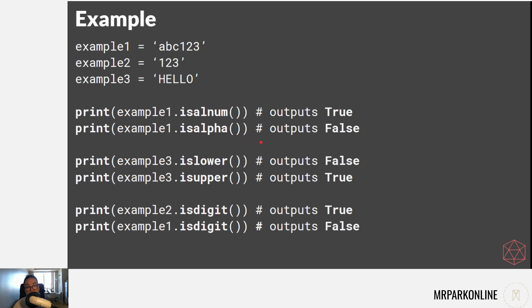Example one is 'abc123', example two is '123', example three is 'HELLO'. Example one isalnum is true because it has alphabetical and numeric values. Example one isalpha is false because it has alphabetical characters but also numeric characters. Example three islower is false because everything's uppercase. Example three isupper is true. Example two isdigit is true because everything is numeric values, whereas example one isdigit is false. You can use these in your if statements or assign them to variables to help solve string-based problems.